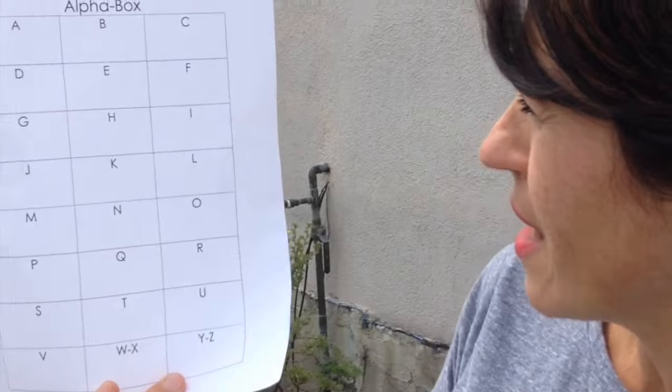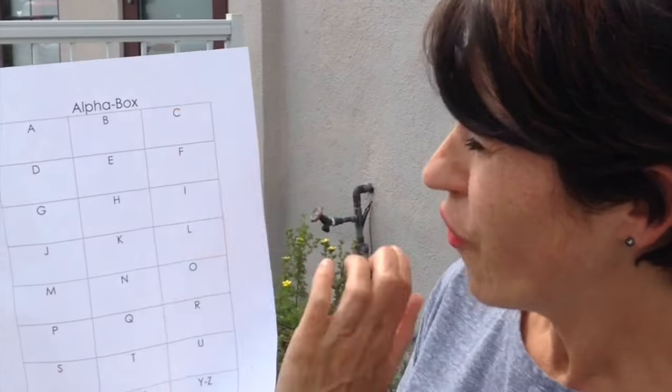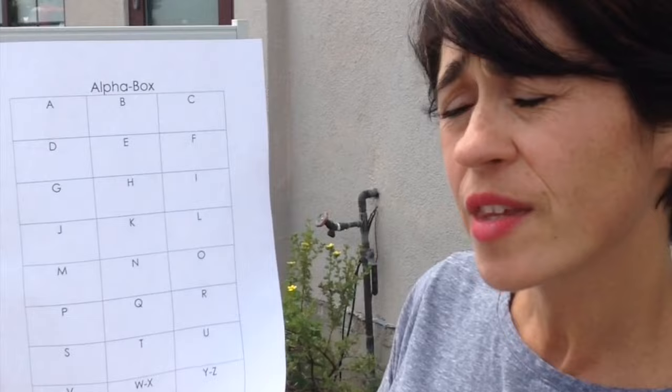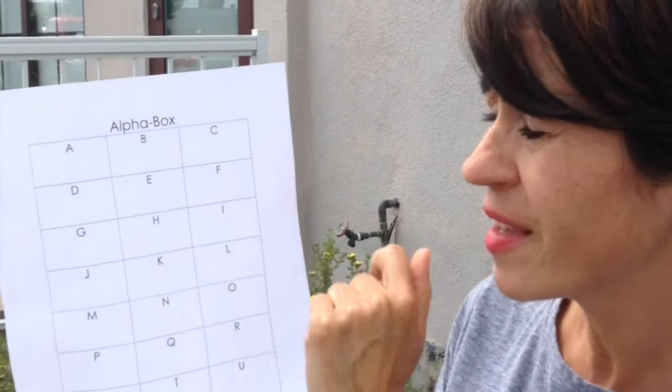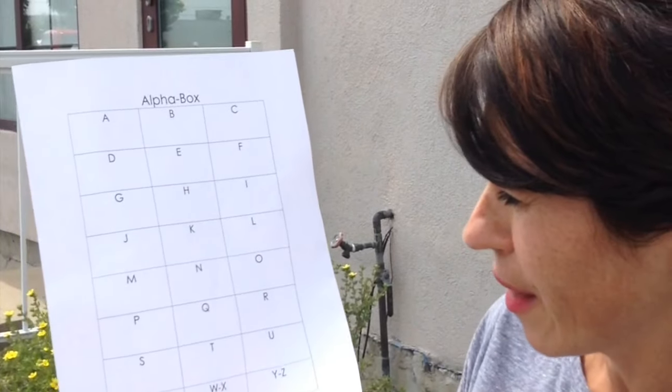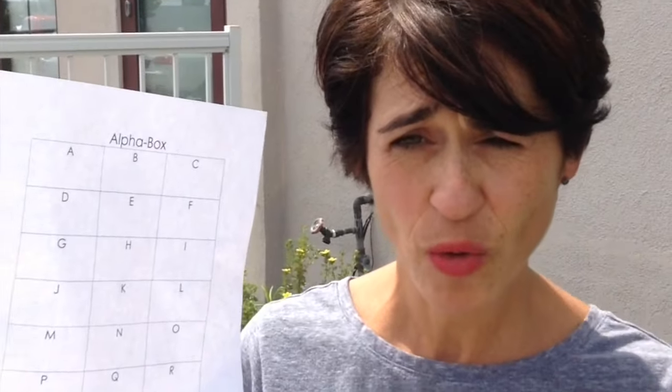I'll explain how it works. It's quite simple. There are three steps. Step number one, you fill it out individually. So let's say I'm giving the students the theme of sports — you find as many words as you can. B, baseball. C, canoeing. S, skating. That's step one.